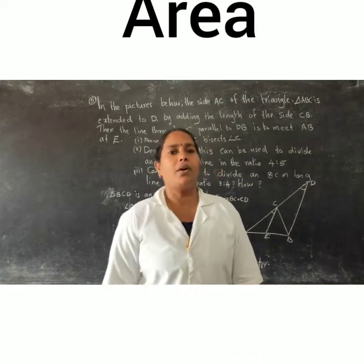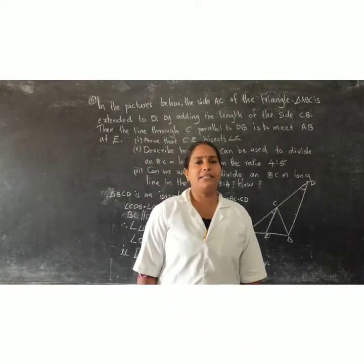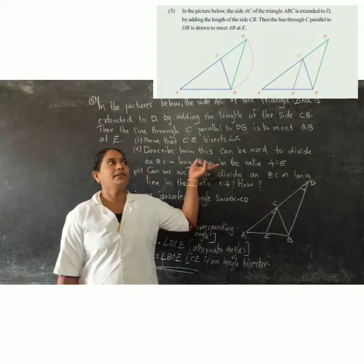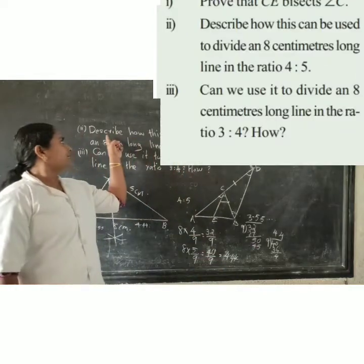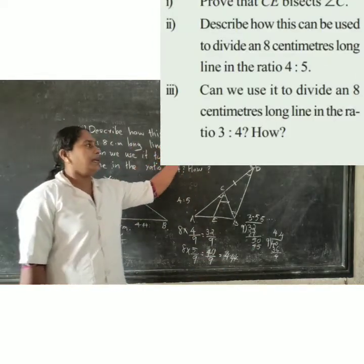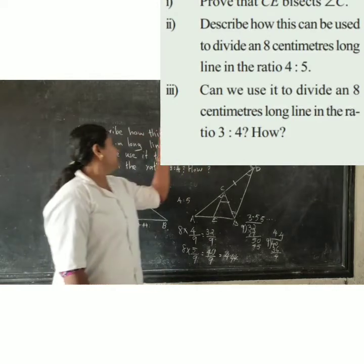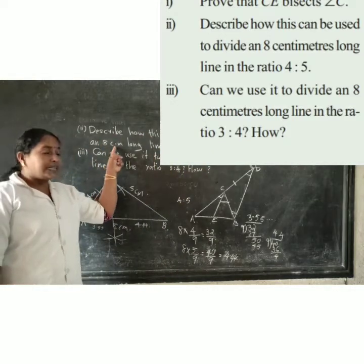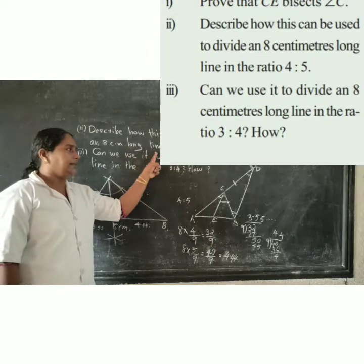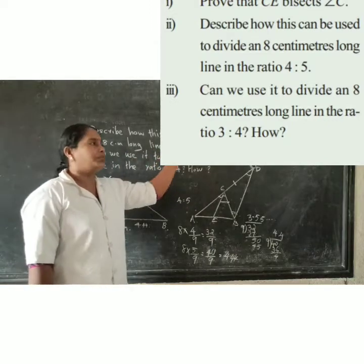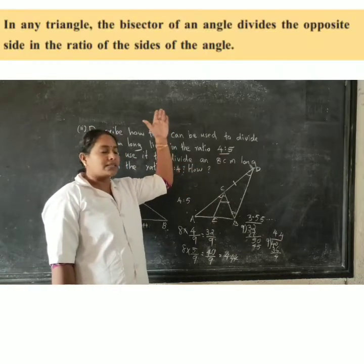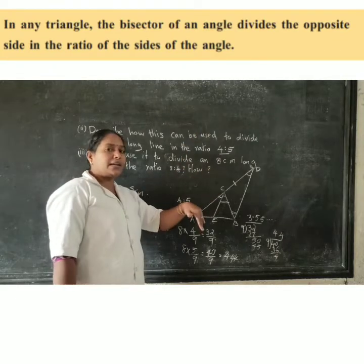Hi students, good morning all of you. Today I discuss the 5th question, sub-question. Describe how this can be used to divide an 8 cm long line in the ratio 4 is to 5.